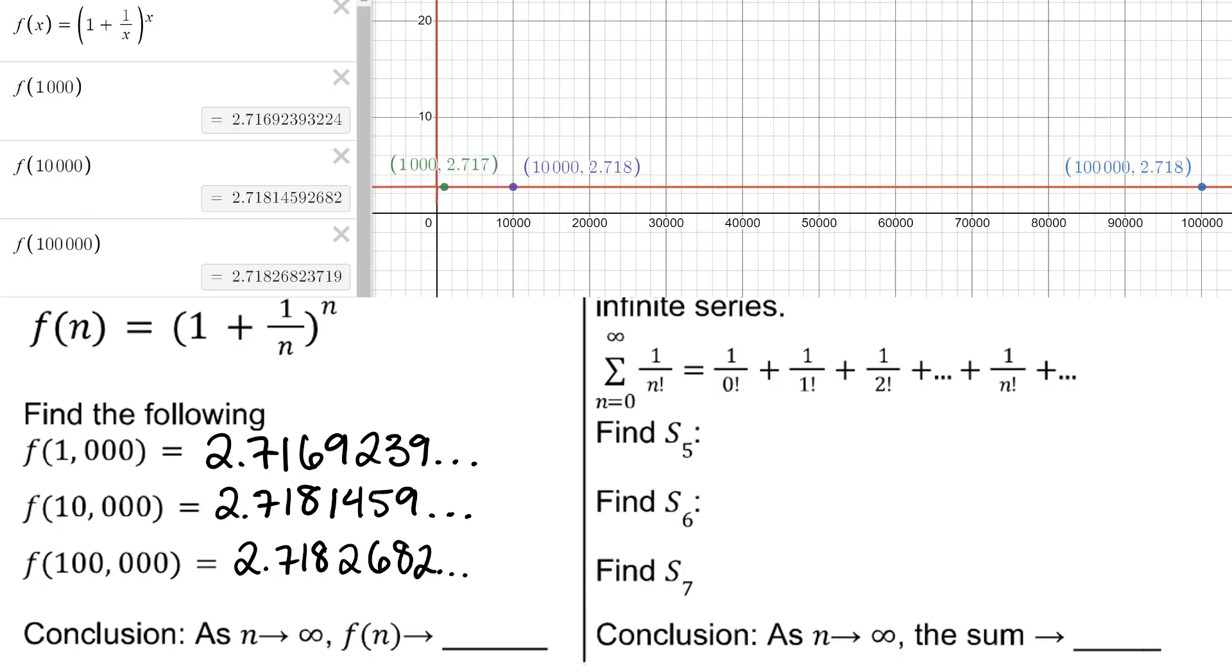So Bernoulli's conclusion was that as n approaches infinity, as we compound the interest more and more frequently, f(n) is approaching a special irrational multiplier of e: 2.718281828459 and so on.